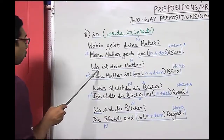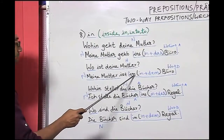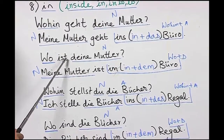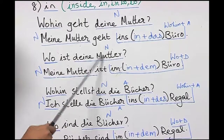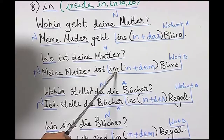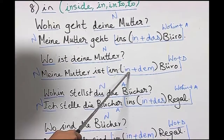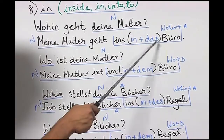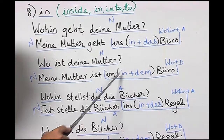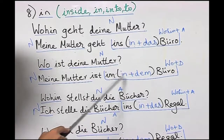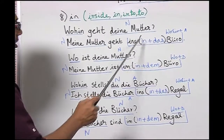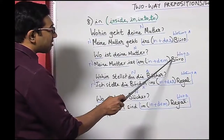Now let us look at: Wo ist deine Mutter? Meine Mutter ist im Büro. With 'wo' we form a dative question. The verb 'ist' is from 'sein', which is a dative verb, and 'deine Mutter' is the only nominative. The answer uses 'im', which is a contraction of 'in' and 'dem'. The article for Büro is 'das Büro', but in dative 'das' becomes 'dem'. We combine 'in' and 'dem' to get 'im Büro'. So 'ins' is accusative neuter, and 'im' can be either dative neuter or dative masculine.